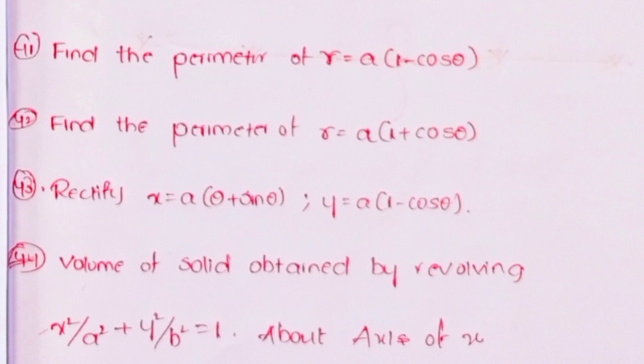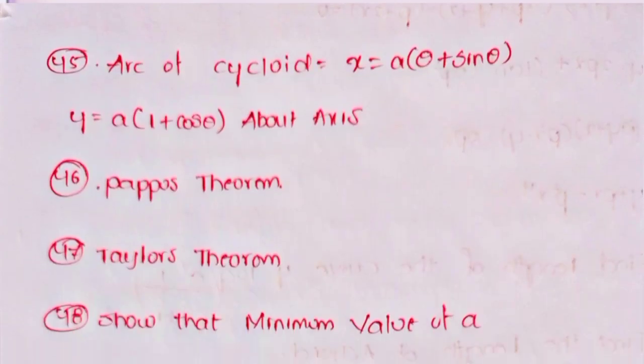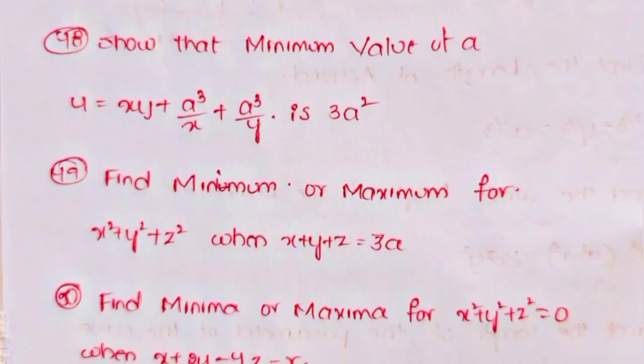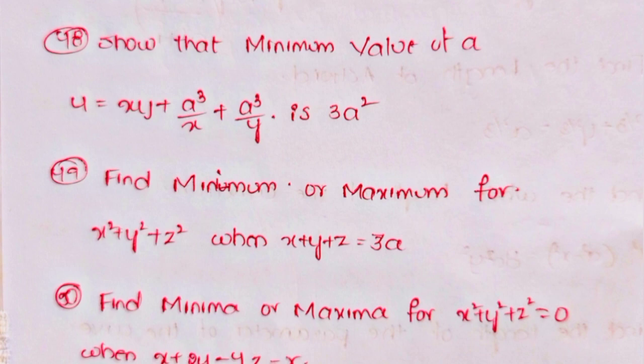Forty-fourth, find the volume of the solid obtained by revolving the ellipse x²/a² + y²/b² = 1 about the x-axis. Forty-fifth, find the volume from the arc of the cycloid x = a(θ + sinθ), y = a(1 + cosθ) about the axis. Forty-sixth, Pappus' theorem. Forty-seventh, Taylor's theorem. Forty-eighth, show that the minimum value of u = xy + a³/x + a³/y is 3a².